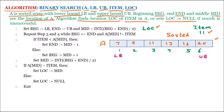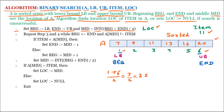We start the algorithm at line 1, which sets beginning equal to lower bound, so beginning equals 1. Then end is equal to upper bound, so end equals 6. Then we find mid equal to the integer value of (beginning + end) / 2. That is (1 + 6) / 2 = 7 / 2 = 3.5, and the integer value of 3.5 is 4. So mid is pointing at the 4th index position.